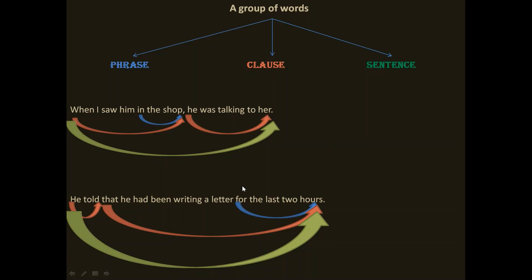Take another example: 'He told that he had been writing a letter for the last two hours.' The phrase here is 'for the last two hours' — it is a part of the whole sentence and doesn't have its own subject and predicate. 'He told' has a subject and predicate, so 'he told' is a clause. 'That he had been writing a letter for the last two hours' is another clause because it has got subject and predicate. So in this sentence we have got two clauses, and from 'he' to the end it is a complete unit giving complete sense — so this is a sentence.